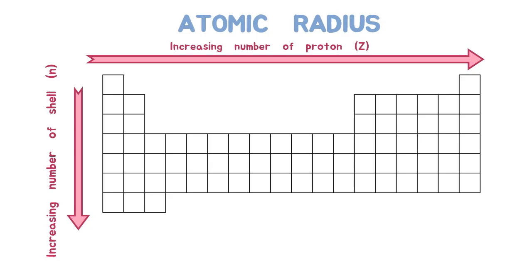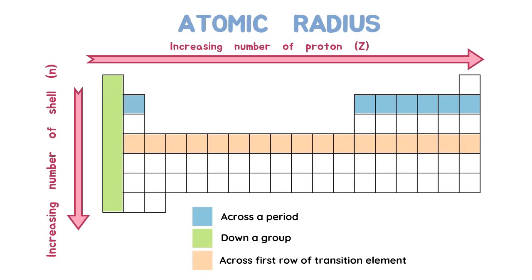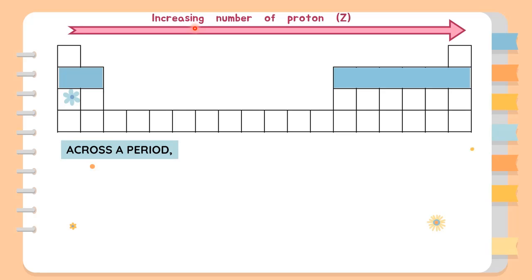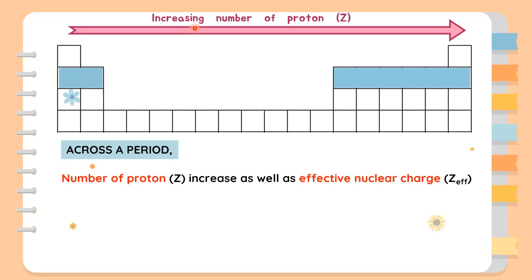For atomic radius, we'll go through the trend across the period, down a group, and across the first row of transition elements. First, across a period, the atomic radius decreases because we are moving within a shell and each element on the right has one more proton in the nucleus than the one on the left. So across a period, increasing proton number will also increase the effective nuclear charge.